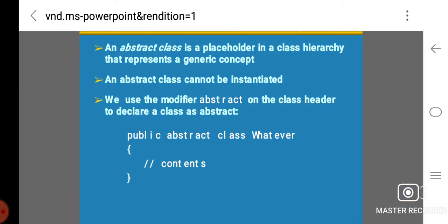The abstract class is a placeholder in a class hierarchy that represents a generic concept. An abstract class cannot be instantiated. We use the modifier abstract on the class header to declare a class as abstract: public abstract class, followed by the class contents within braces.